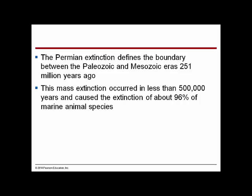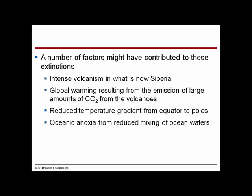The Permian extinction defines the boundary between the Paleozoic and Mesozoic eras, 250 million years ago. This mass extinction occurred in less than 500,000 years and caused the extinction of about 96% of marine animal species. Contributing factors include intense volcanism in what is now Siberia, global warming from large CO2 emissions from volcanoes, a reduced temperature gradient from equator to poles, and ocean anoxia — lack of oxygen from reduced mixing of ocean waters.